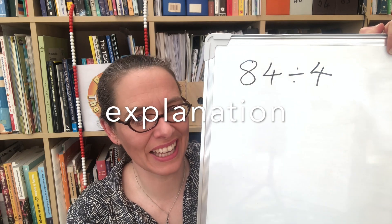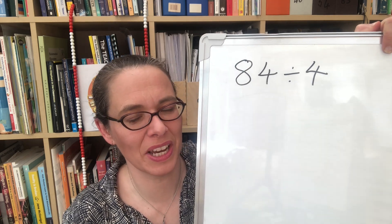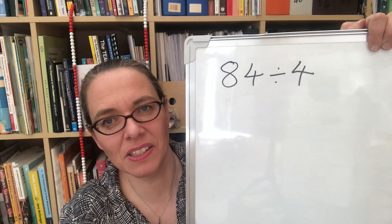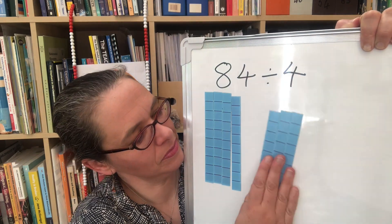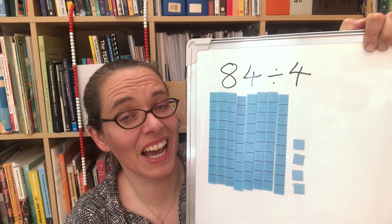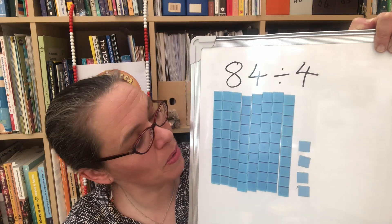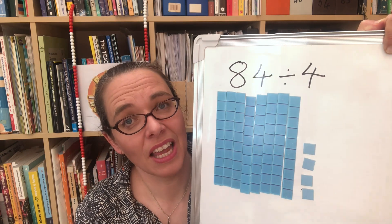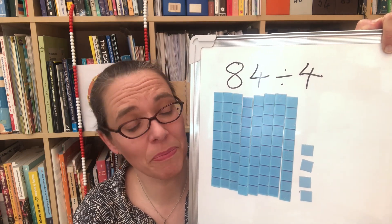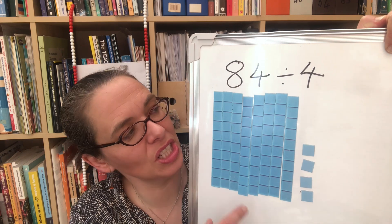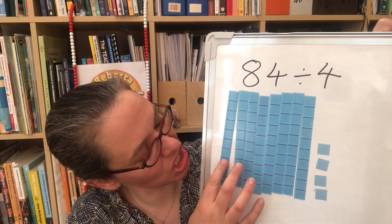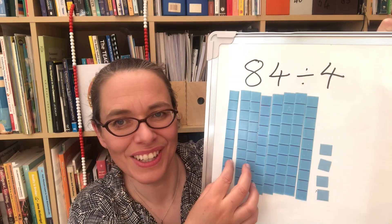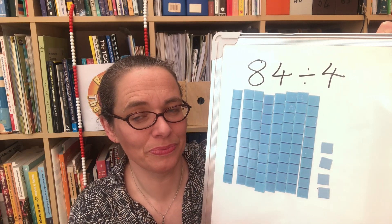Let's make a start by looking at this division: 84 divided by 4. First of all we want to build the 84 with base 10 apparatus and we can ask our child to have a go at that. Now if they really struggle, it's probably because they're thinking about division as counting how many fours there are, and that's difficult to do with this apparatus because we're going to need to break each 10 into ones to be able to count fours, and that takes a long time.